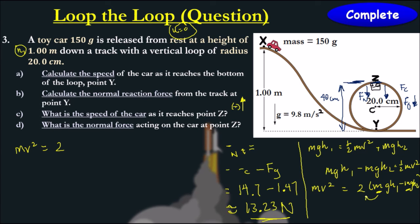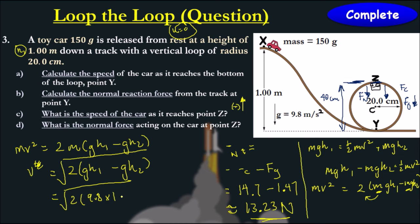Mv squared equals to 2, we can also move this m out because it's the same mass. And we get 2m times gh1 minus gh2. We could even move the g out because it's the same acceleration due to gravity. But the reason why I'm doing this is so when I divide this m, I can cancel this m out. So it just becomes square root of 2gh1 minus gh2. If I substitute all the values in, 2 times 9.8 times 1, subtracted by 9.8 times 40 cm, so 0.4.